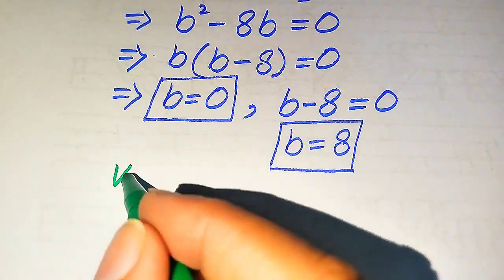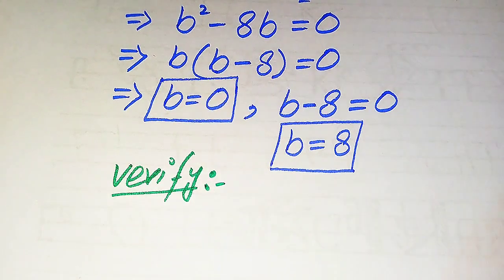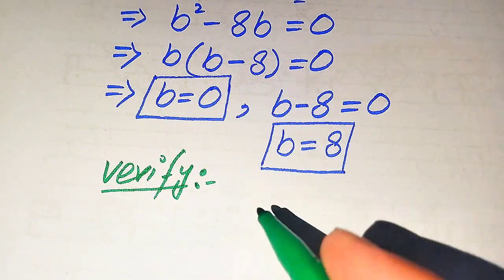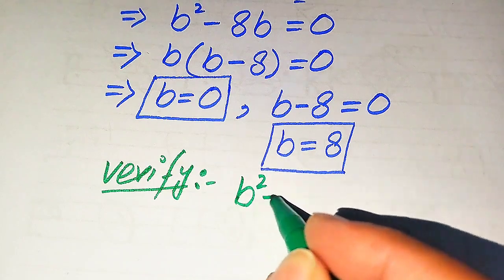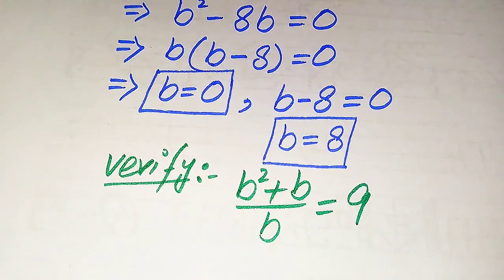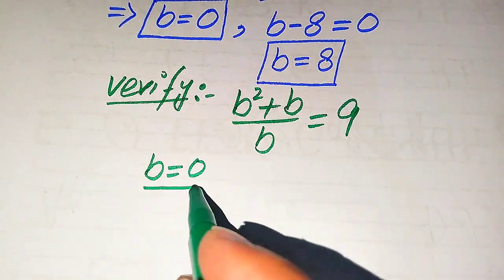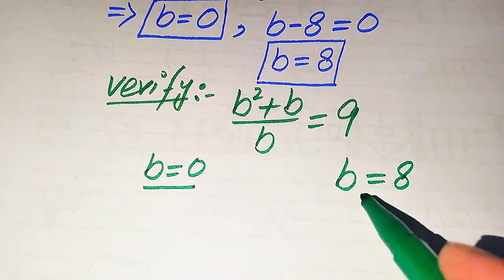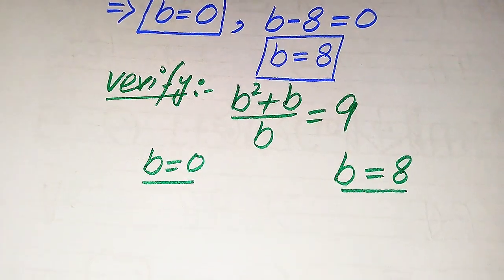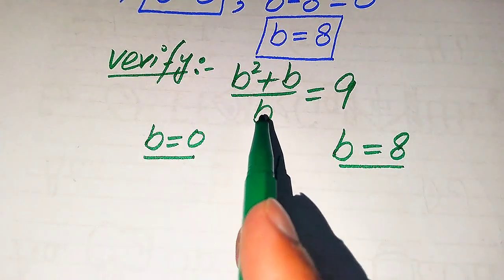We need to verify whether these roots are solutions of the given equation or extraneous roots. For verification, we copy down the given equation: b squared plus b divided by b equals 9. On one side we will verify b equals 0, and on the other side we will verify b equals 8.